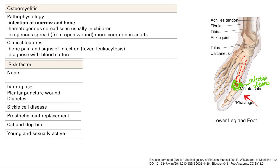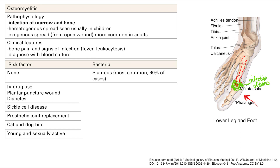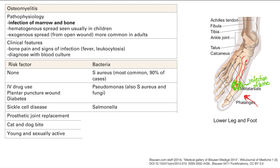There are a couple of risk factors and associated bacteria to memorize. The most common bacteria overall with no risk factors is Staph aureus — that's 90% of cases. If a patient is an IV drug user, had a plantar puncture wound, or has diabetes, it's probably Pseudomonas. If you have sickle cell disease, the bacteria is probably Salmonella. If you have a prosthetic joint replacement, the most likely bacteria is Staph epidermidis — they really like those joints. Cat and dog bite: Pasteurella. If you're young and sexually active: Neisseria gonorrhea.